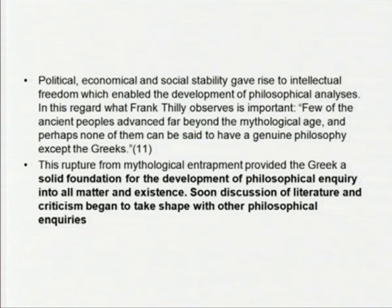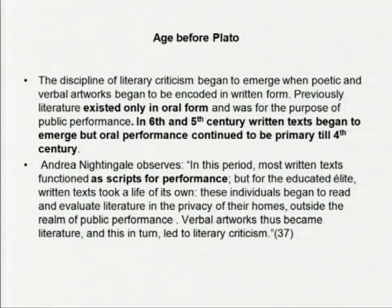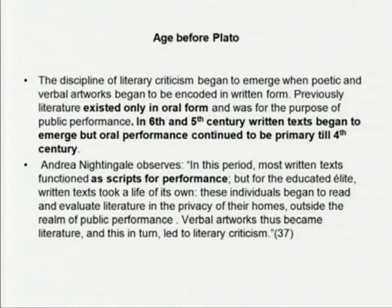When we look back to the age before Plato, the discipline of literary criticism began to emerge when poetic and verbal artworks began to be encoded in written form — from the oral to the written. Previously, literature existed only in oral form and was for public performance. In the 6th and 5th centuries, written text began to emerge, but oral performance continued to be primary until the 4th century. As Andrea Nightingale observes, most written texts functioned as scripts for performance, but for the educated elite, written text took a life of its own — read and evaluated in the privacy of homes outside the realm of public performance.